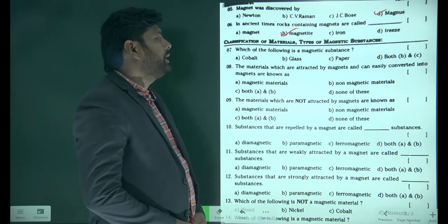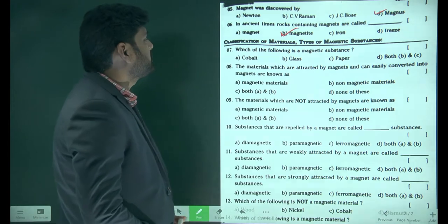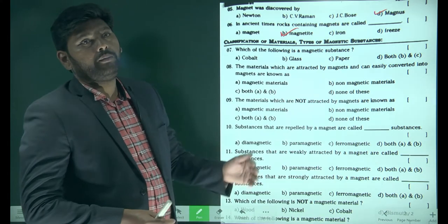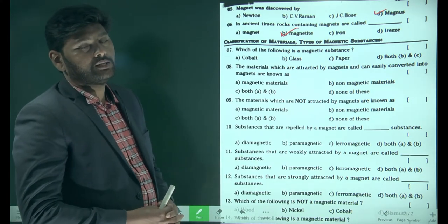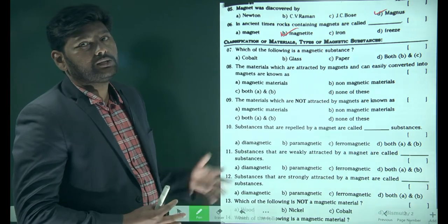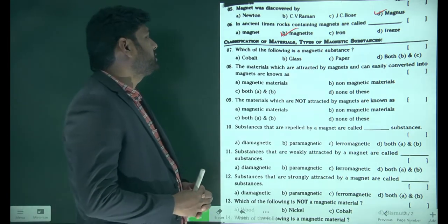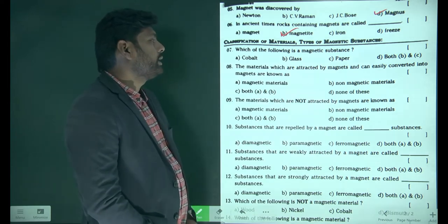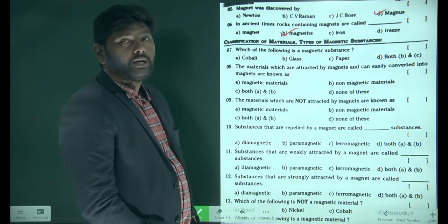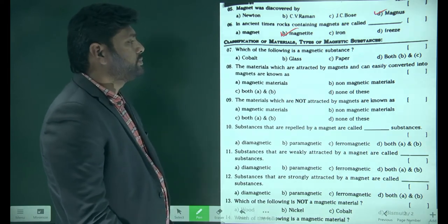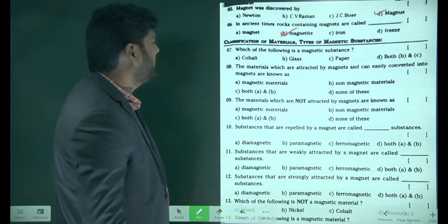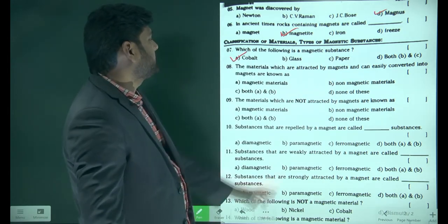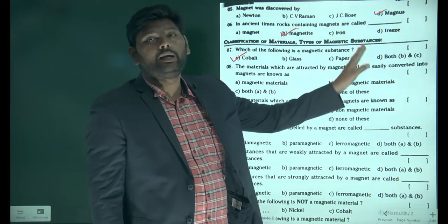Which of the following is a magnetic substance? This question is based on the property of magnetic materials. The options are: cobalt, glass, paper, and both B and C. The simple answer is cobalt, because glass and paper are diamagnetic materials.